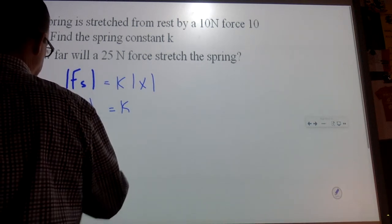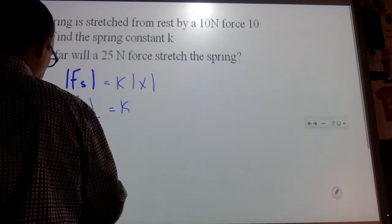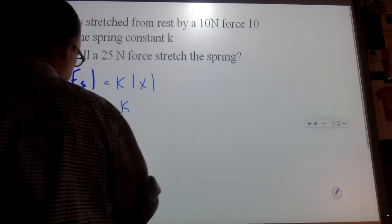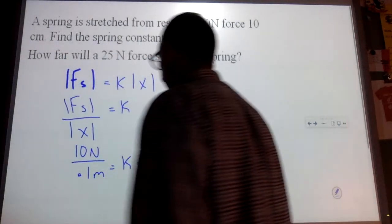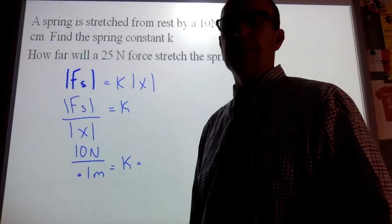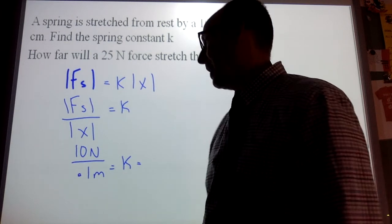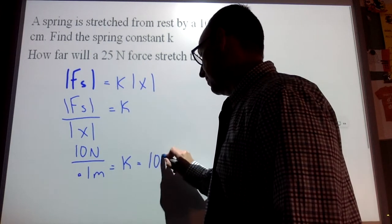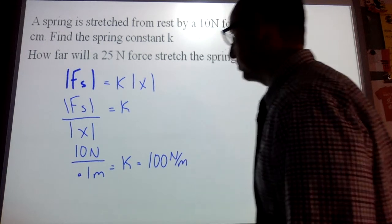So this is going to be 10 newtons over 0.1 meters for our K. And K is very often just a generic constant all throughout science. So it's 100 newtons per meter.